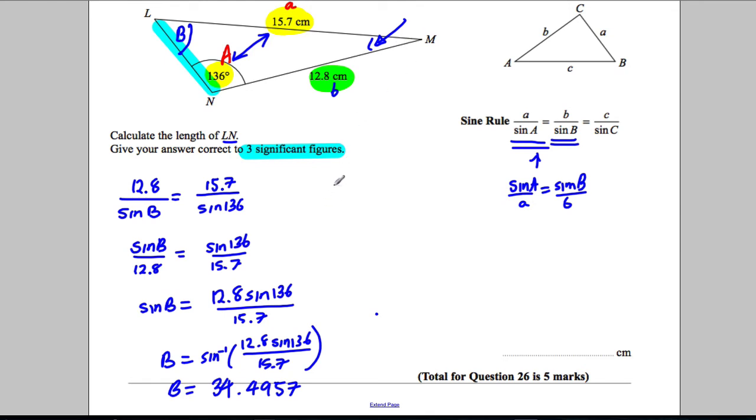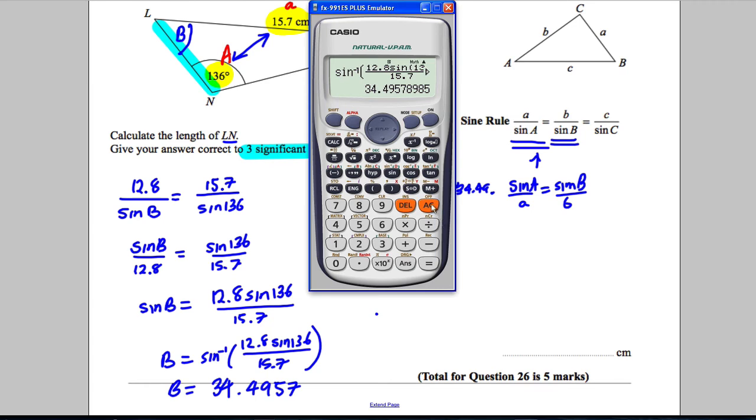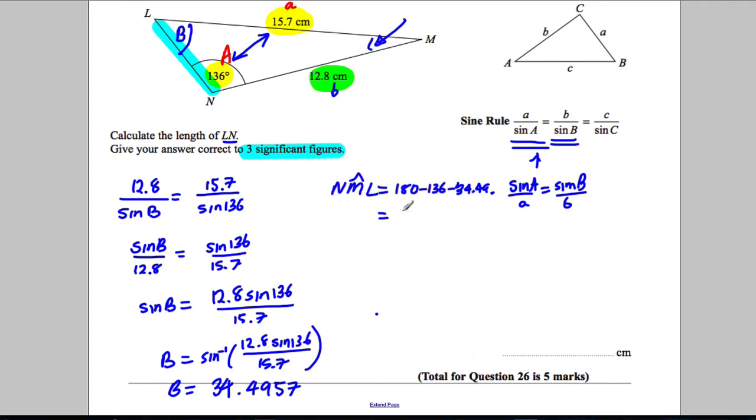So therefore this angle here M, so I could say that NML, that angle there is 180 subtract 136 subtract 34.49 etc. So I remember that as ants, so that's 180 subtract 136 subtract ants is going to be 9.5 degrees. So this angle here is 9.5042 degrees that one there.